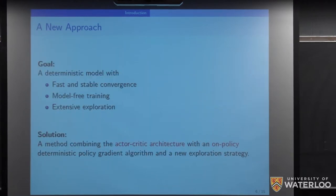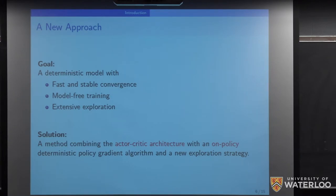What the authors come up with is a deterministic model following the actor-critic architecture, using an on-policy deterministic policy gradient. Recall the difference between on-policy and off-policy: in off-policy algorithms like epsilon-greedy, we can choose actions based on any policy — not necessarily the current one. In on-policy algorithms, we choose the next action based on the current policy.